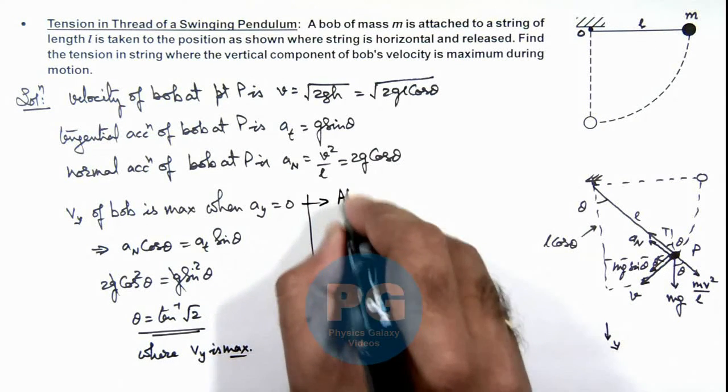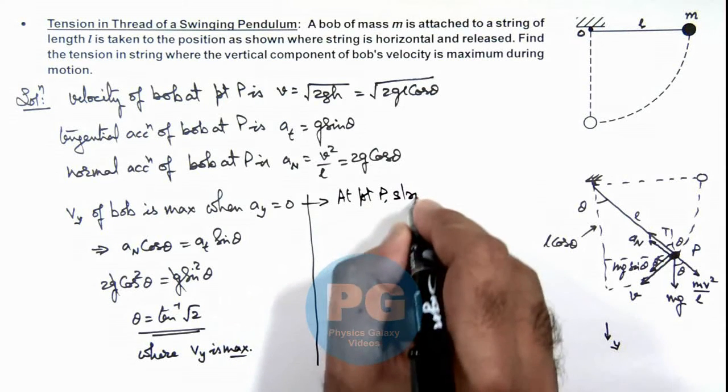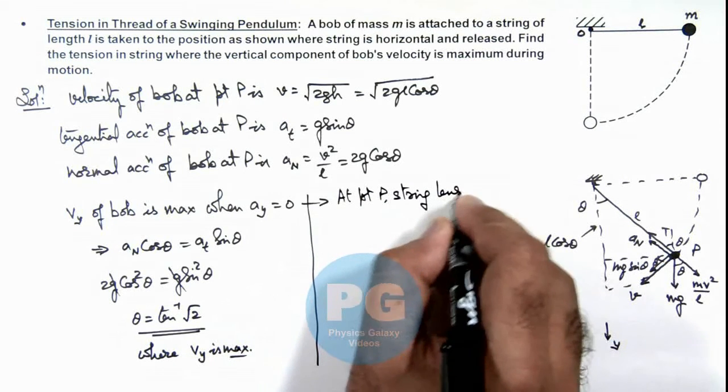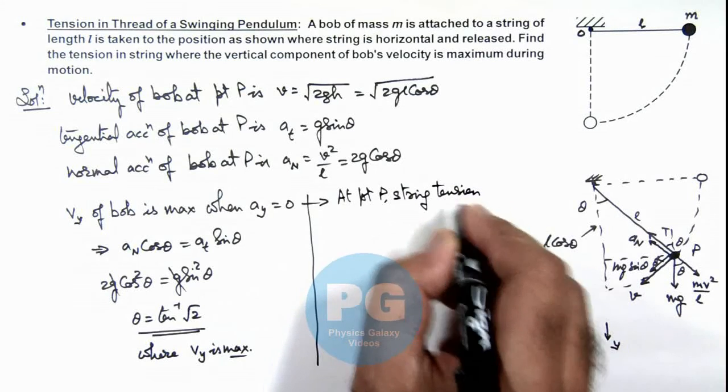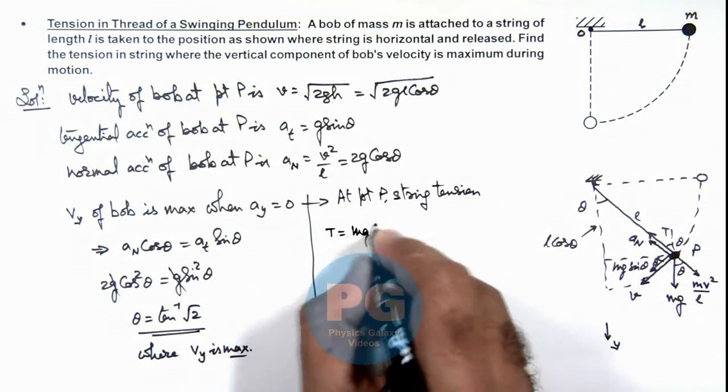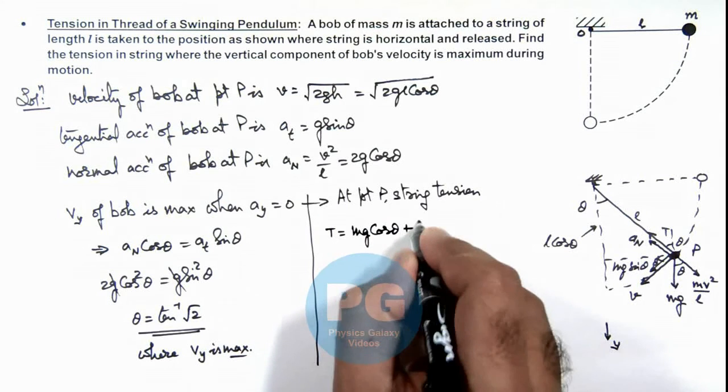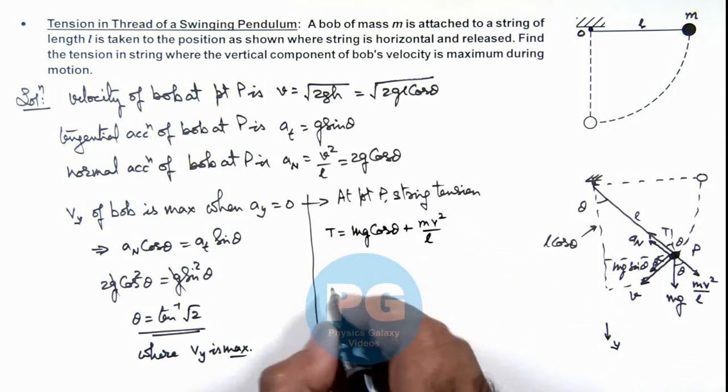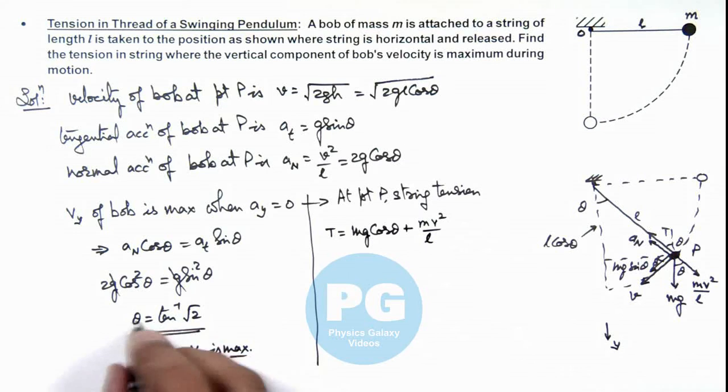At point P, string tension is given as T = mg cos θ + mv²/l. Here, as tan θ is √2, we can substitute the value of cos θ directly. You can also substitute the value of v², which is 2gl cos θ.